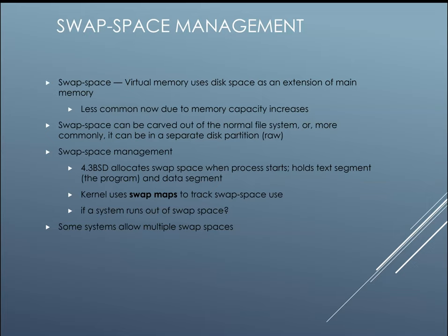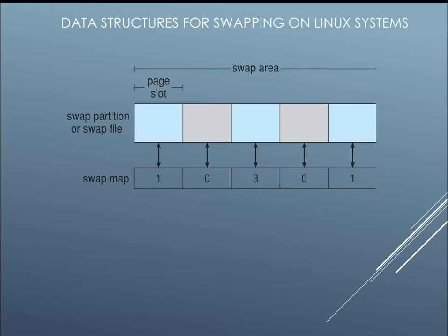Sometimes you have to use swap space. Virtual memory uses disk space as an extension of main memory, though these days it's getting less common because of large main memories. Swap space can be carved out of a normal file system or, more commonly, put in its own partition. BSD allocates swap space when the process starts, holding the text segment and data segment of the program in the swap space, and the kernel uses swapping maps to go back and forth. Here's an example of the data structure for swapping on Linux — a partition file and a swap map that indicates where data is on the actual drive.